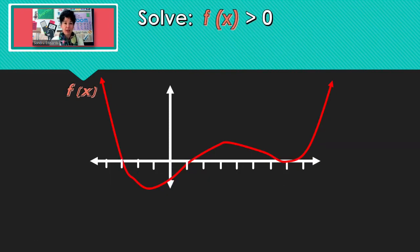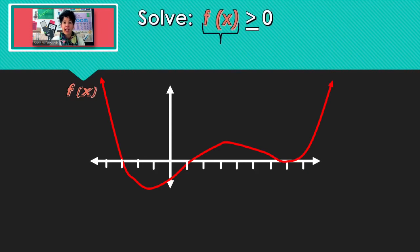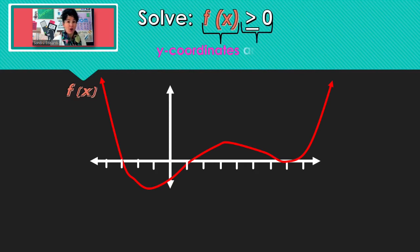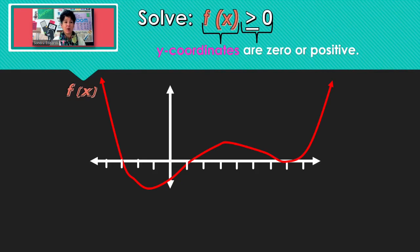Let's say we look at the same problem but change it just a little bit. Instead of greater than 0, let's say greater than or equal to 0. How does that change our solution? The f of x — remember, that's your y — greater than or equal to 0 means numbers that could be 0 or positive. So we want to use any part of the graph where the y is 0 or positive.